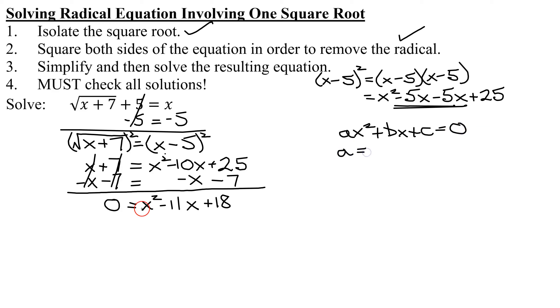In this case, a is 1. It's a simple factoring problem. b is negative 11. And c is positive 18. So I multiply a times c, I get 1 times 18 is 18. So I'm looking for two numbers that multiply to 18 and they add to b, which is negative 11.